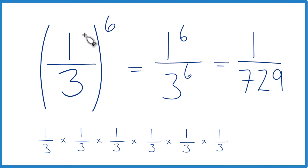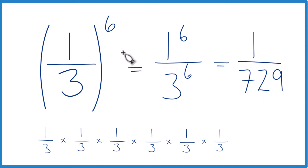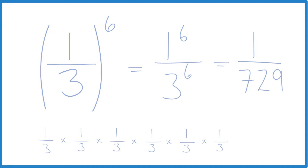So when we write one-third to the sixth as a fraction, we get one seven-hundred-and-twenty-ninth. This is really small, but think about it — you're taking a fraction of a fraction of a fraction and so on, so it should be a small number. That's it. This is Dr. B looking at one-third to the sixth power. Thanks for watching.